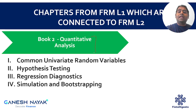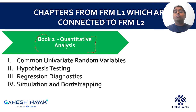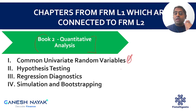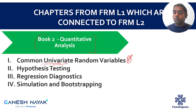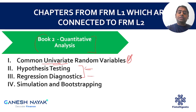Book 2 is Quantitative Analysis. For Level 2 there is no direct statistics tested in the curriculum, but certain concepts repeat in terms of understanding. The Common Univariate chapter — discussion on t-distribution, normal distribution, and log-normal distribution — is very connected to Level 2. The next two chapters, Hypothesis Testing and Regression Diagnostics, are also important.